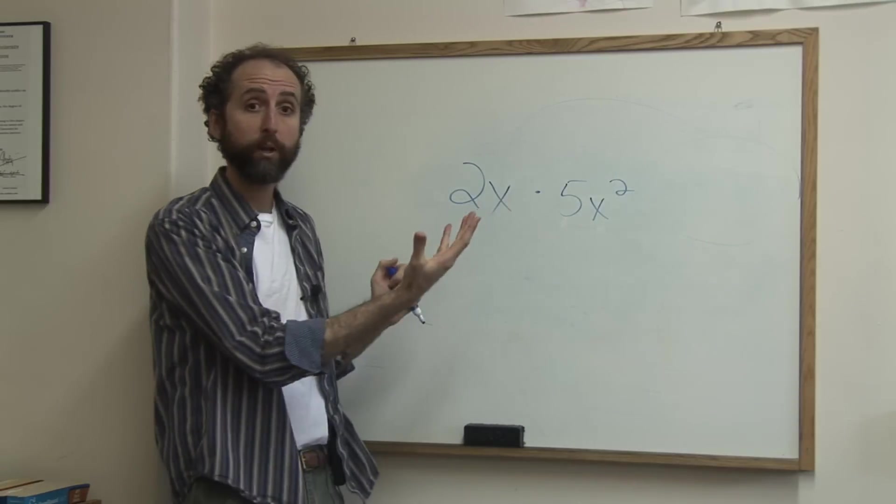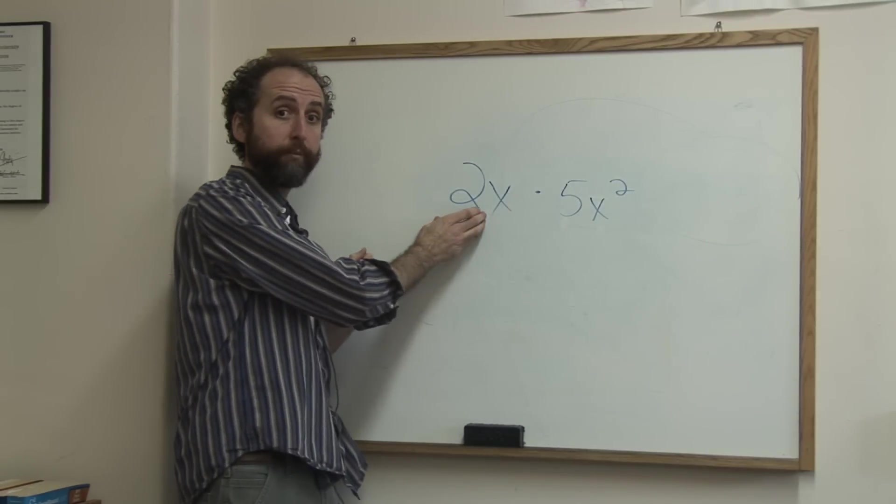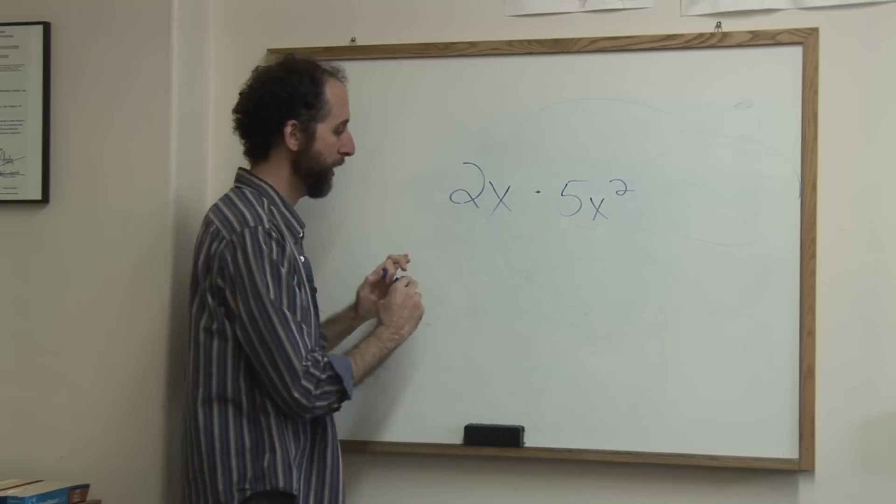So 2 times - a coefficient, by the way, is the number in front of the variable - so 2 times 5 is 10.